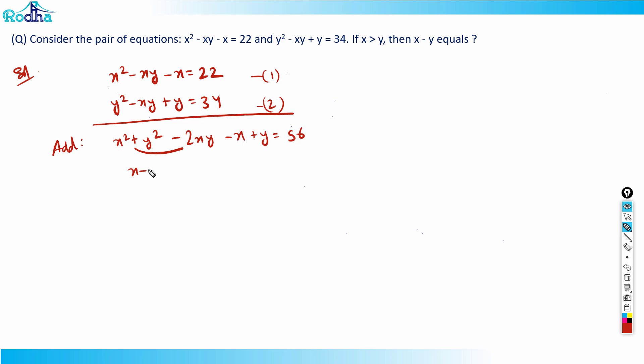And here it's left with -1 times (x - y) equals 56. So (x - y)² minus (x - y) equals 56.